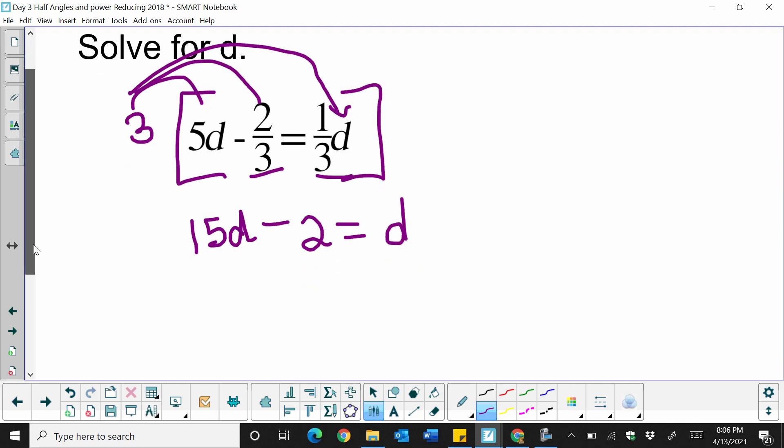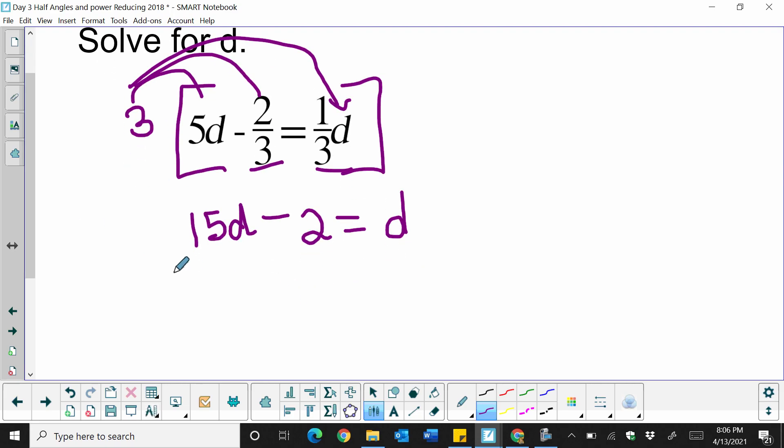So now I just need to solve. So the next thing I'm going to do is I'm going to collect my like terms. So I'm going to move my 15d to the other side, so subtract 15d. So I'm left with, and be very careful here, I'm left with a negative 2. Don't drop your negative here. Negative 2 is equal to a positive 1d, and a negative 15 is negative 14d.